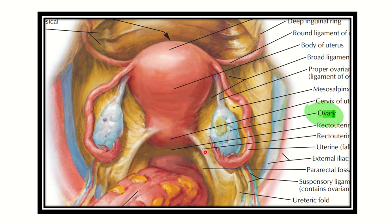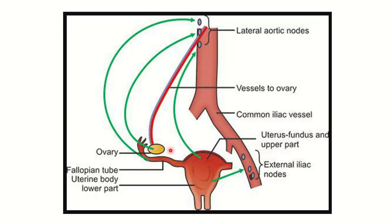Here we can see the ovary on the left side and on the right side. We can also see the uterus, fallopian tube, and other related structures. The ovary is located in the pelvic area, so it is a pelvic organ. We need to find out the particular lymphatic drainage of this ovary.